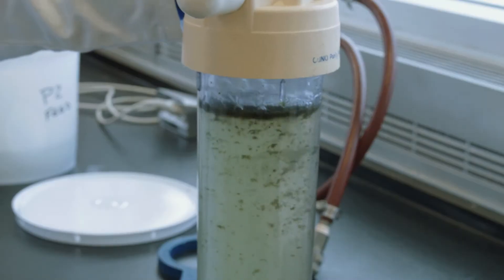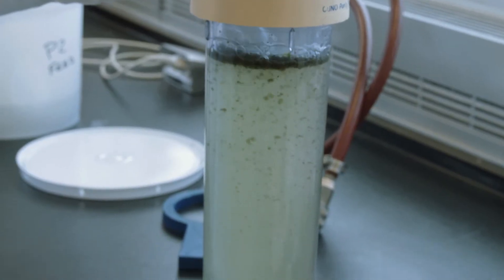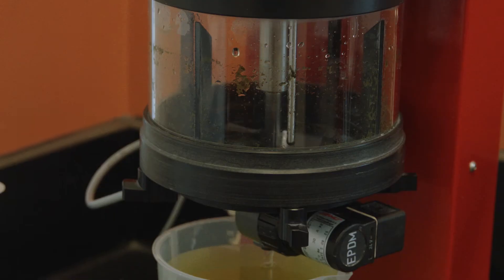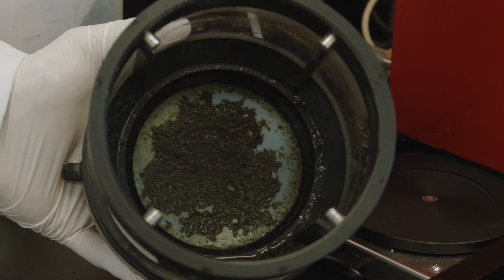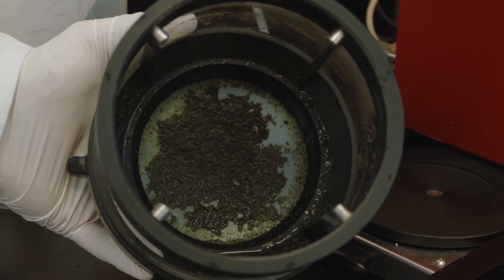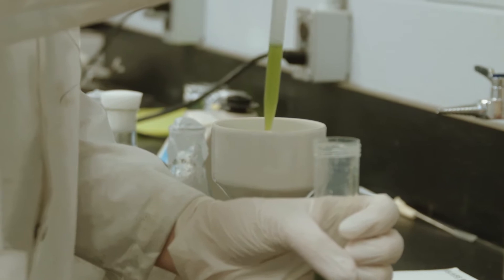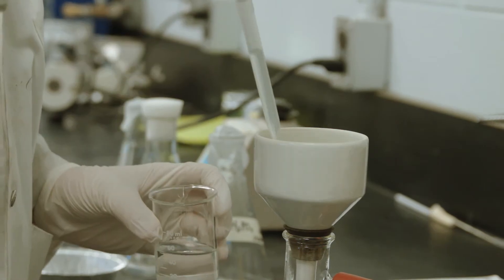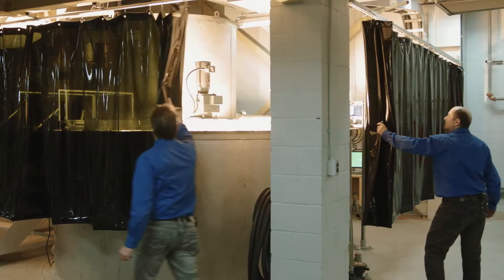First, the microalga have to be liberated from their environment, the strong cell wall surrounding each cell has to be weakened, and finally, the desired products have to be purified, separating them from the range of organic molecules released during cell lysis.